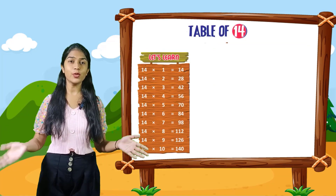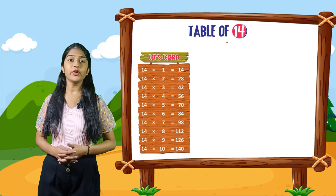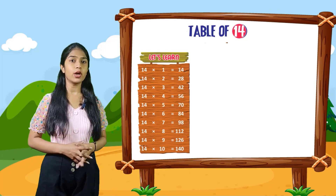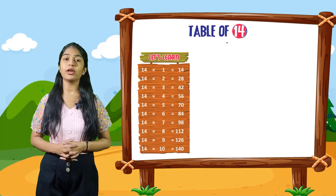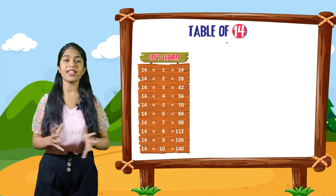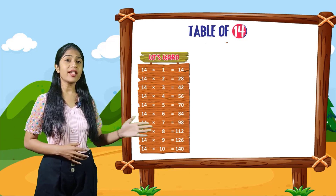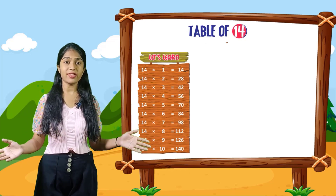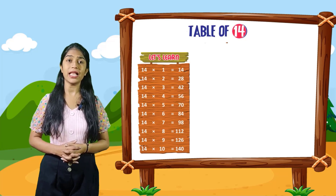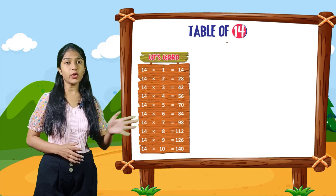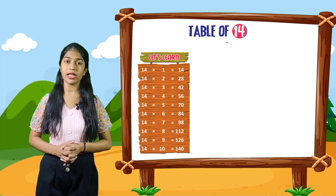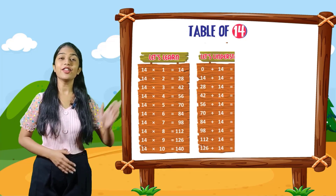So now we will do the table of 14. Let's learn. 14 into 1 is equal to 14. 14 into 2 is equal to 28. 14 into 3 is equal to 42. 14 into 4 is equal to 56. 14 into 5 is equal to 70. 14 into 6 is equal to 84. 14 into 7 is equal to 98. 14 into 8 is equal to 112. 14 into 9 is equal to 126. 14 into 10 is equal to 140.